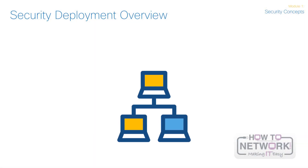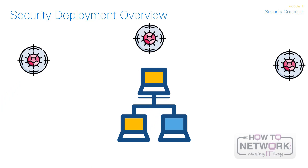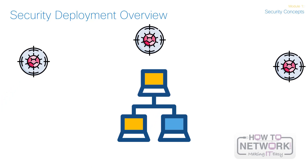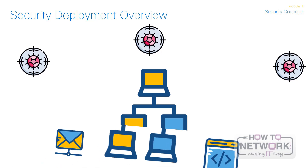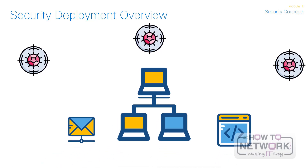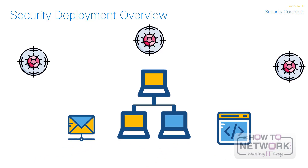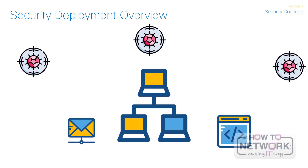Numerous types of network threats are growing and changing on a daily basis as modern networks use a wide range of applications, protocols, and ports. Various types of network security technologies have been developed to mitigate or defend against these attacks. Email content security systems battle email-based attacks and web content security systems fight web-based attacks.